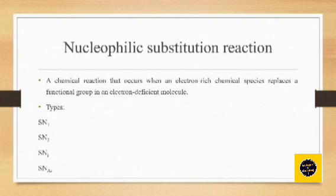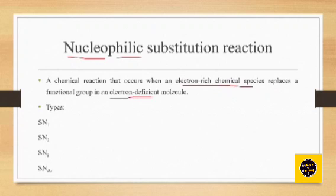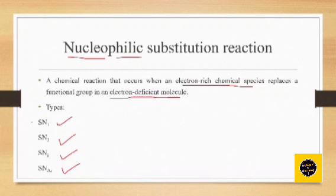Coming to the nucleophilic substitution reaction: a nucleophile means the one which has an electron-rich chemical species — that is, it is attracted toward a nucleus or a positively charged species. A chemical reaction where an electron-rich chemical species replaces a functional group in an electron-deficient molecule is a nucleophilic substitution reaction. We have SN1, SN2, SNi (intramolecular), and SNAr (aromatic). In this video I will mainly focus on SN1 and SN2.